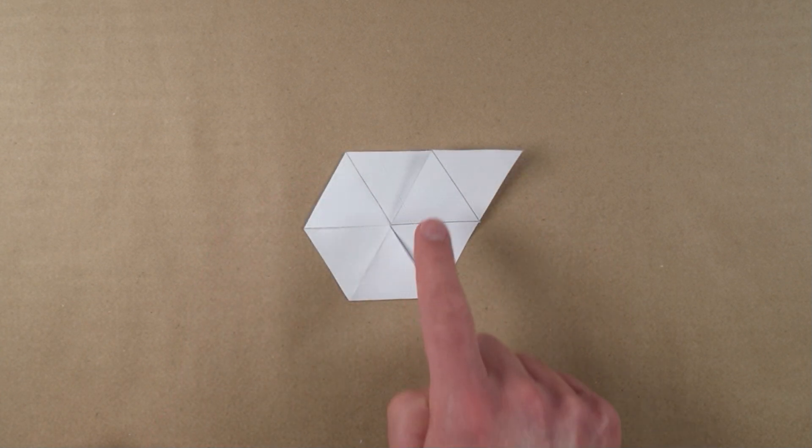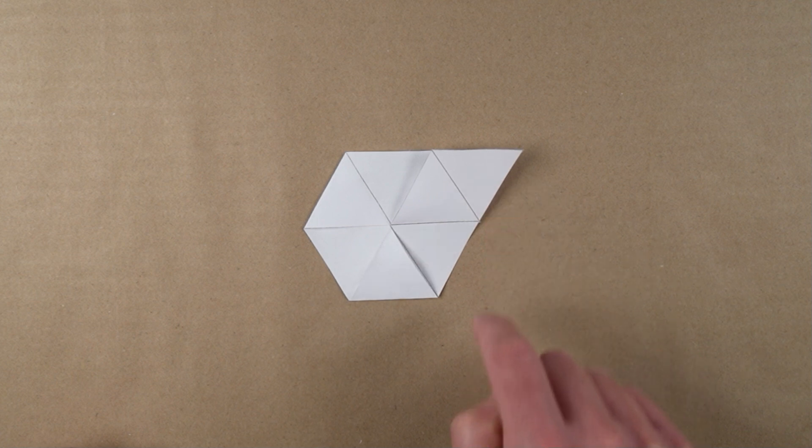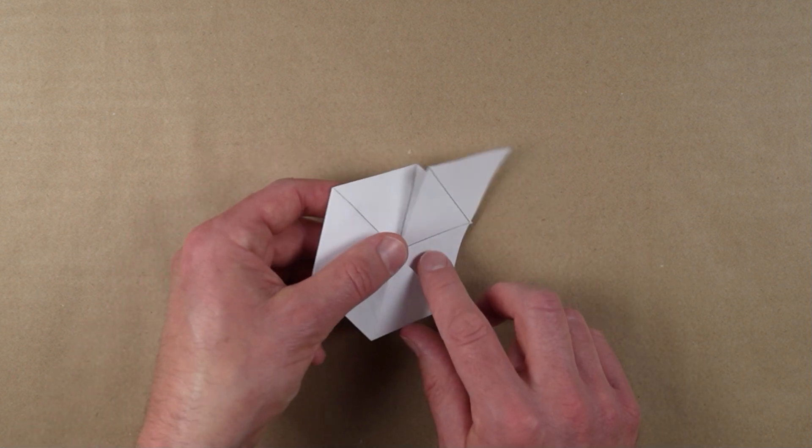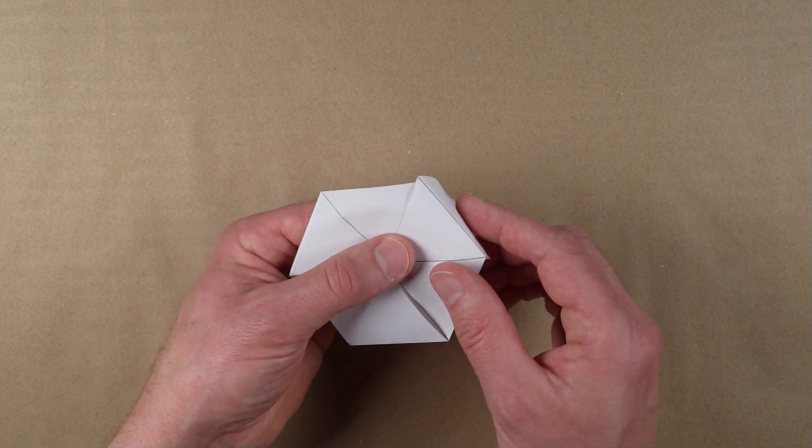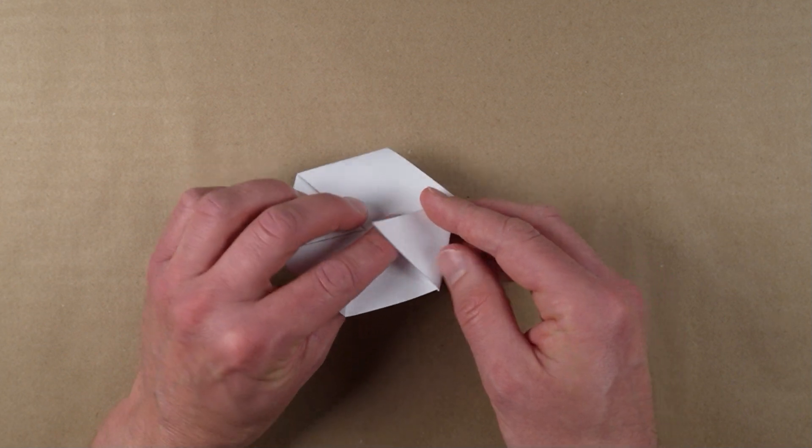You should now have a hexagon with a single triangle sticking out. The last step is to fold this triangle back 180 degrees and glue it to the triangle it covers on the hexagon's face.